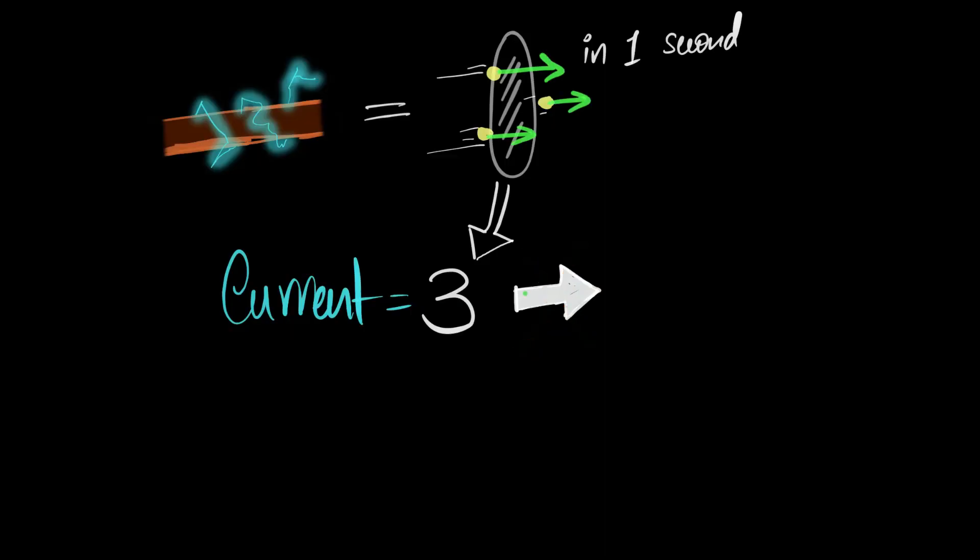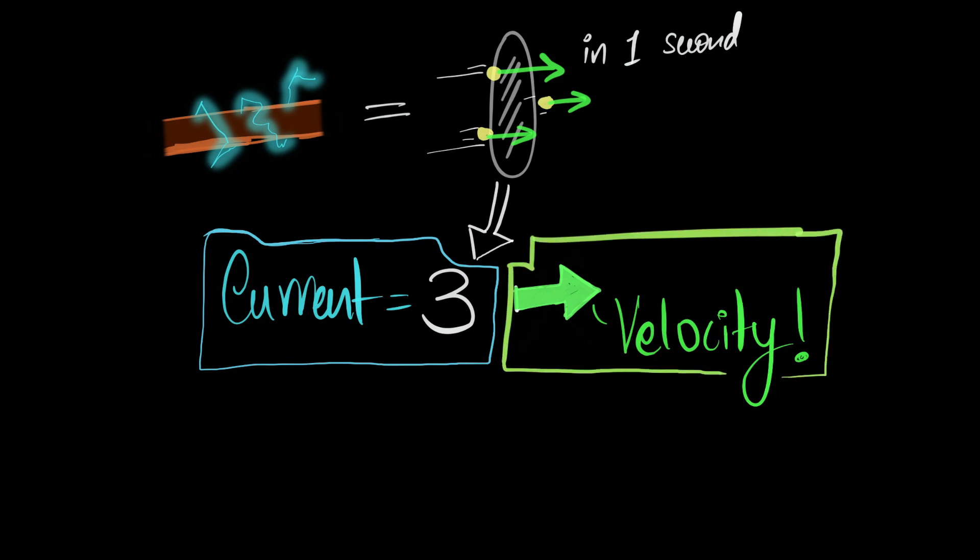But then you may ask, what about the direction that we put in our circuits? We talk about direction of the current, what is that? Well, if you think about it, that direction is not of the current, but it's of the velocity vector of the charges. So, when I say the current over here is three amps to the right, what I really mean is that the current here is three amps. Done, that's it, it doesn't have a direction. But along with that, I'm also saying, the charges have a velocity vector of right.